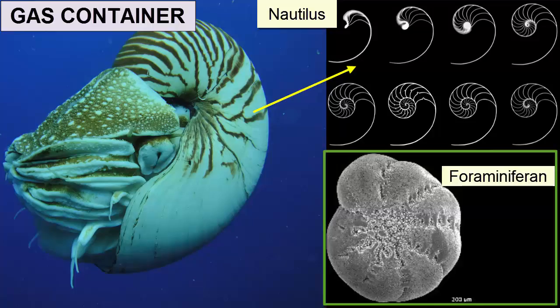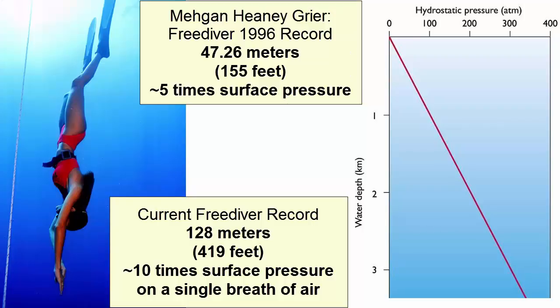Unless they descend too deep — at high pressures, the rigid gas containers will be crushed, causing death. Organisms with gas containers include foraminifera and the chambered nautilus. Marine organisms that live at depth must handle the increase of one atmosphere for every 10 meters of depth, meaning that at one kilometer below the surface the pressure is 100 atmospheres — 100 times surface pressure.